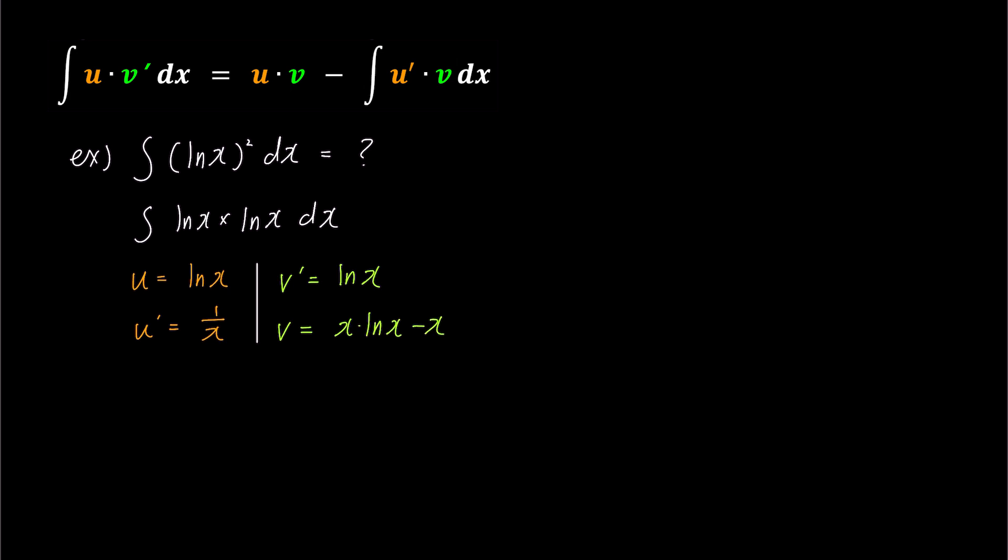Now, applying the integration by parts formula, uv becomes ln(x) parenthesis x times ln(x) minus x and the integral of u'v becomes the integral of 1 over x times parenthesis x times ln(x) minus x and dx.